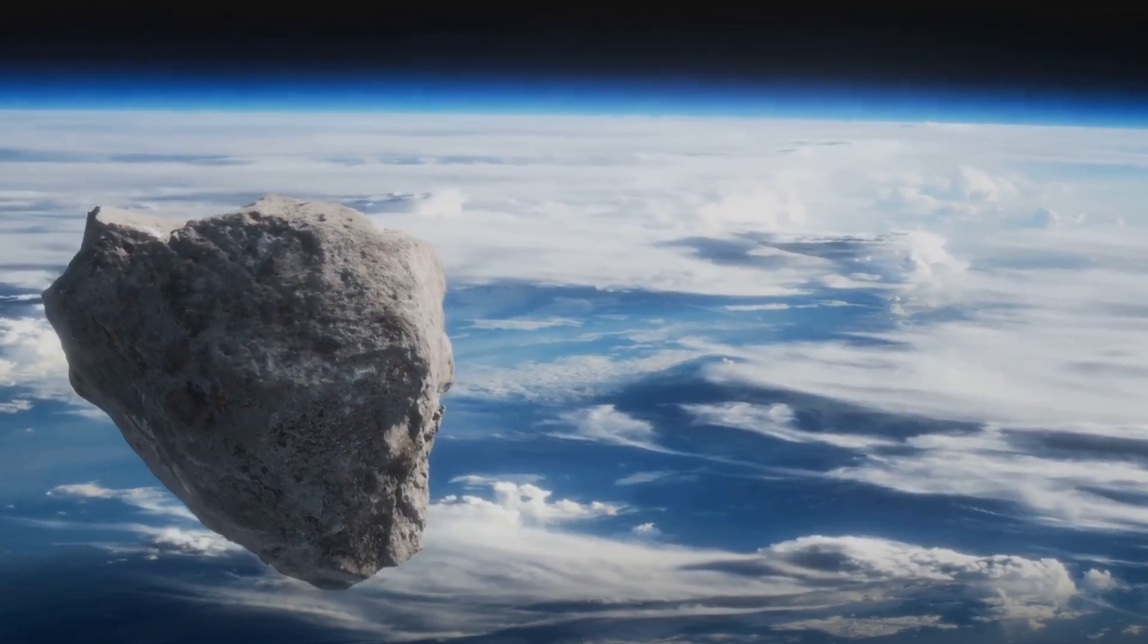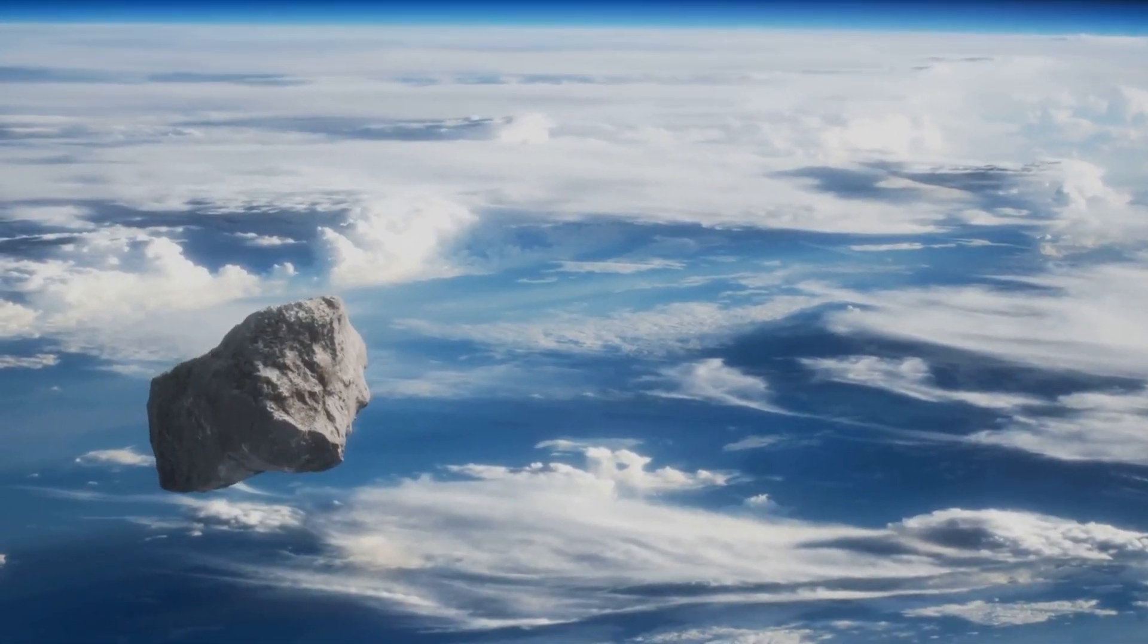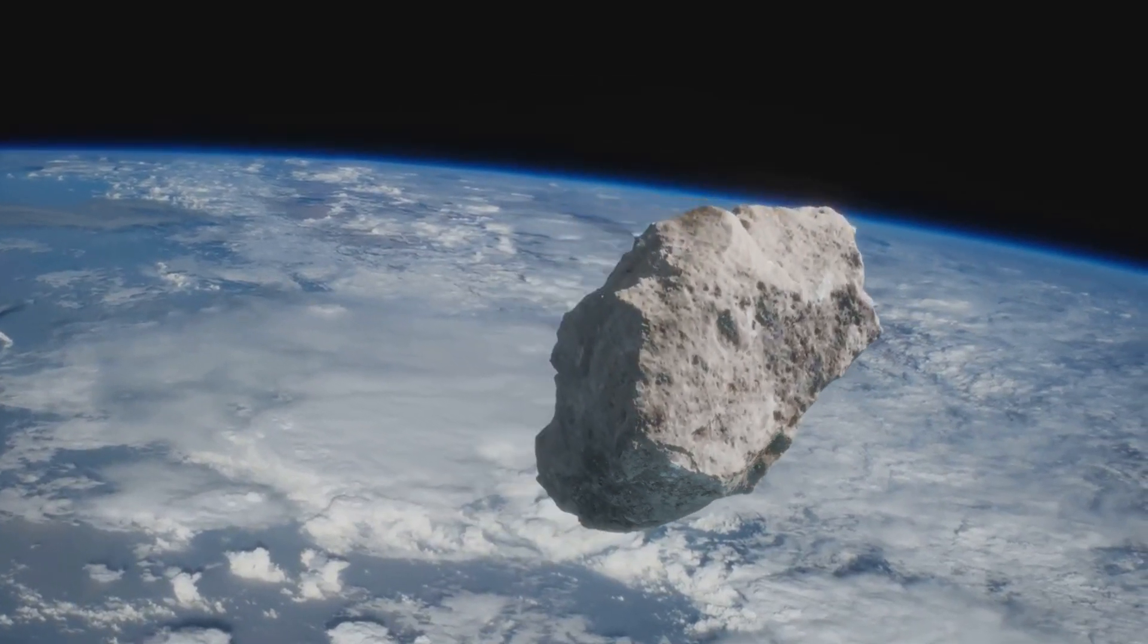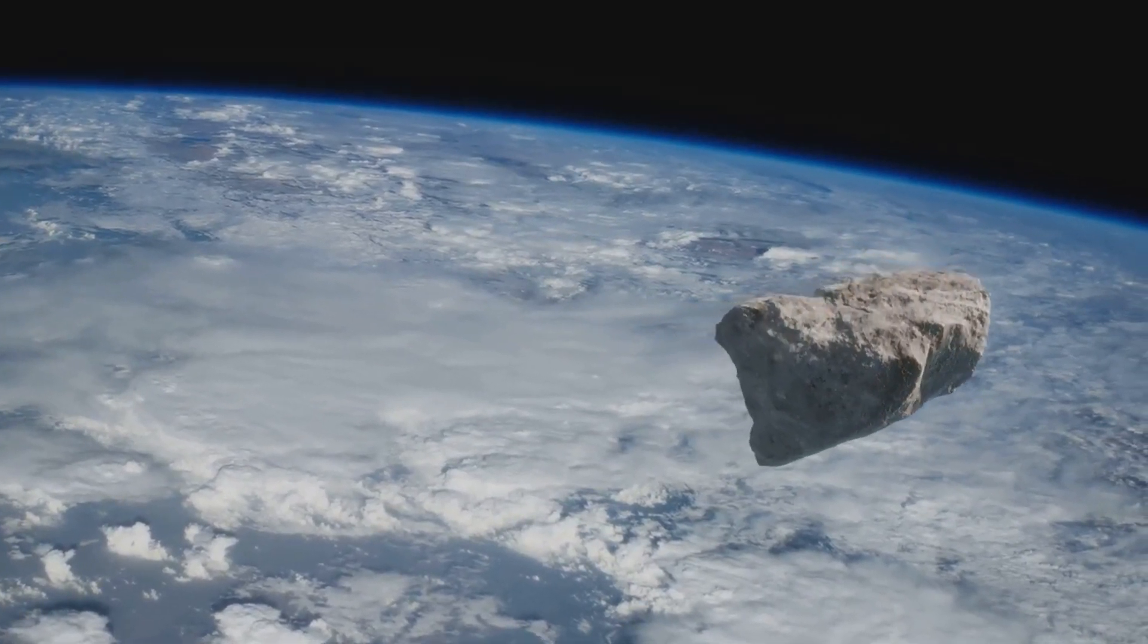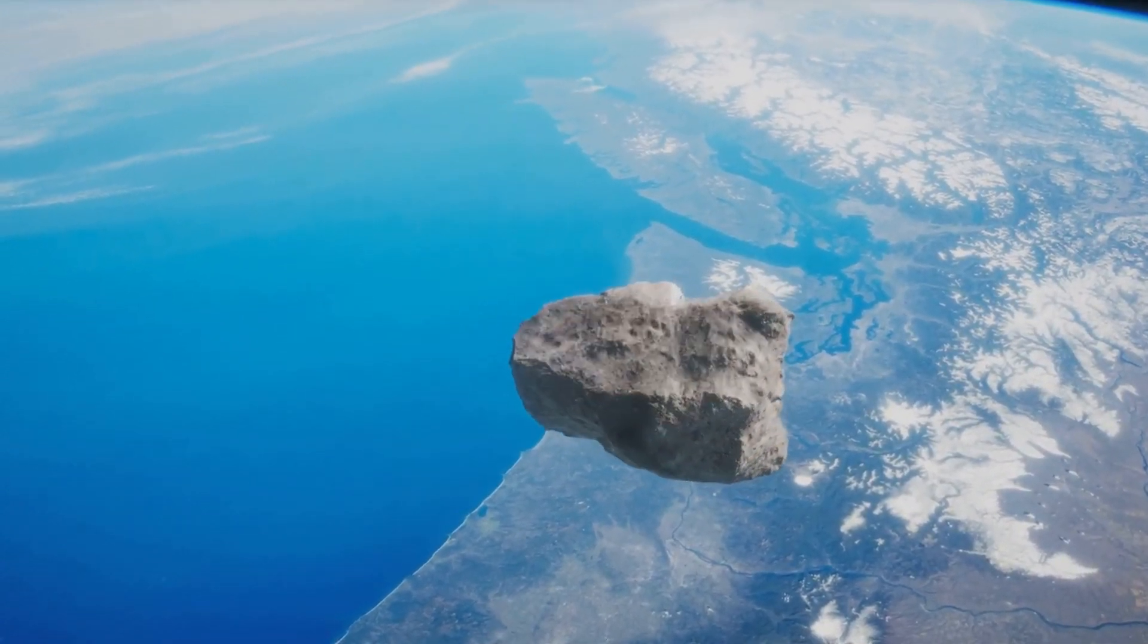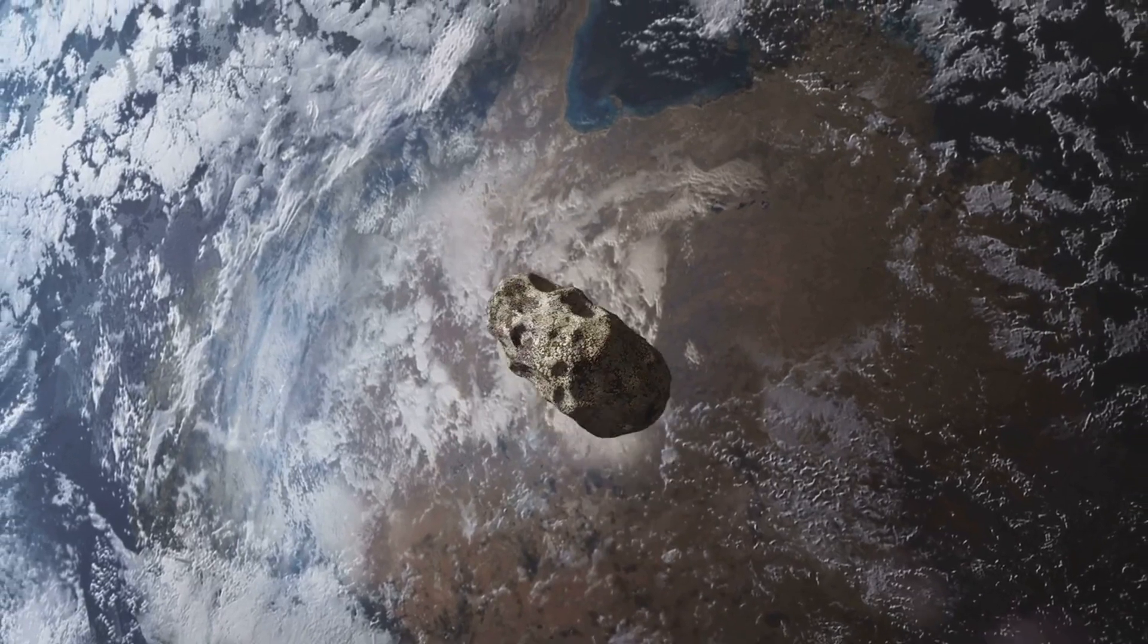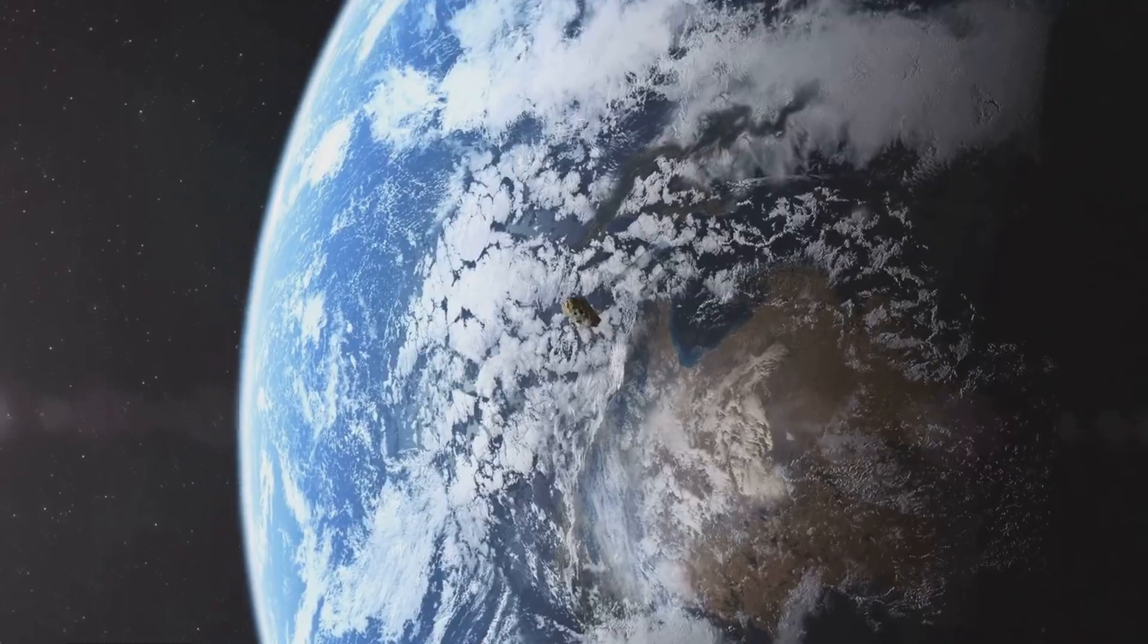But what about the near misses? Sometimes the danger comes too close for comfort. There have been times when the Universe has played a game of cosmic chicken with our planet, and these close encounters serve as stark reminders of our vulnerability. A prime example is Asteroid 2019 OK. This hulking mass of rock and metal, estimated to be between 57 and 130 metres in diameter, made its unannounced appearance in July of 2019. It caught astronomers off guard as it whizzed by our planet, coming within a hair's breadth, astronomically speaking, at a distance of 73,000 kilometres.